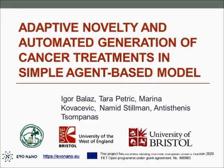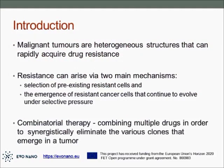In this talk I will focus on harnessing adaptive novelties in automated generation of cancer treatments in a rather simple agent-based model. Our main inspiration for doing this work is the fact that malignant tumors are heterogeneous structures that can rapidly acquire drug resistance. Such resistance can arise through two main mechanisms: first, selection of pre-existing resistant cells, and second, the emergence of resistant cancer cells.